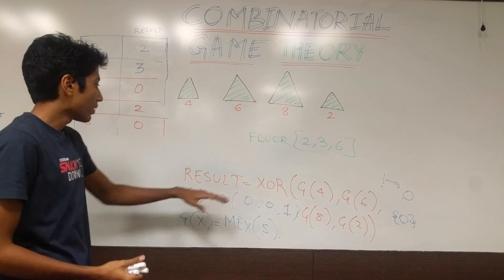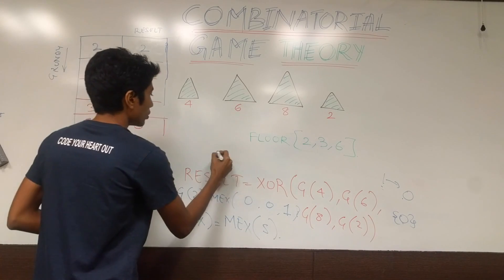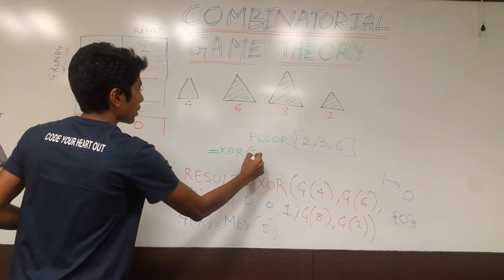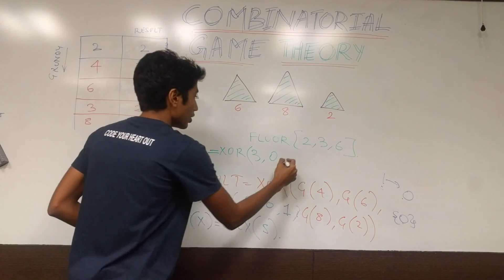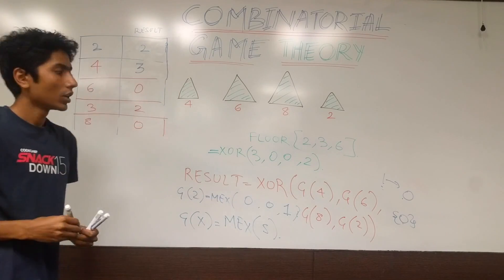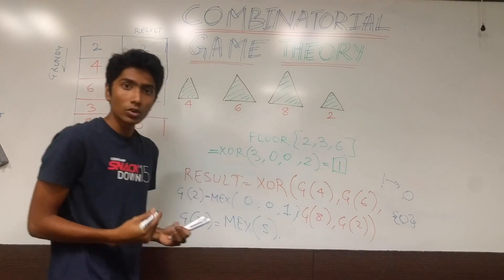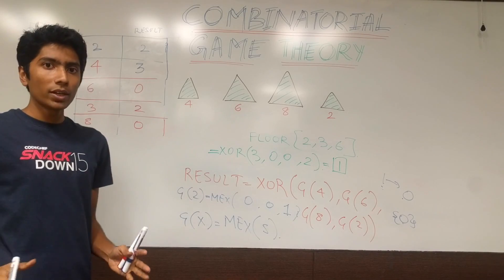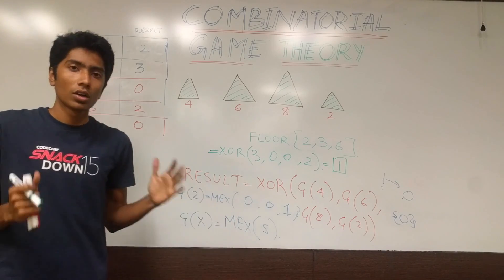Now let's take the result: XOR of Grundy(4), Grundy(6), Grundy(8), Grundy(2) = XOR of 3, 0, 0, 2. The zeros don't affect the result. XOR of 3 and 2 equals 1, which is non-zero. So you are winning this game. If both players play optimally, the person starting this game will win — that's what Sprague-Grundy tells us.